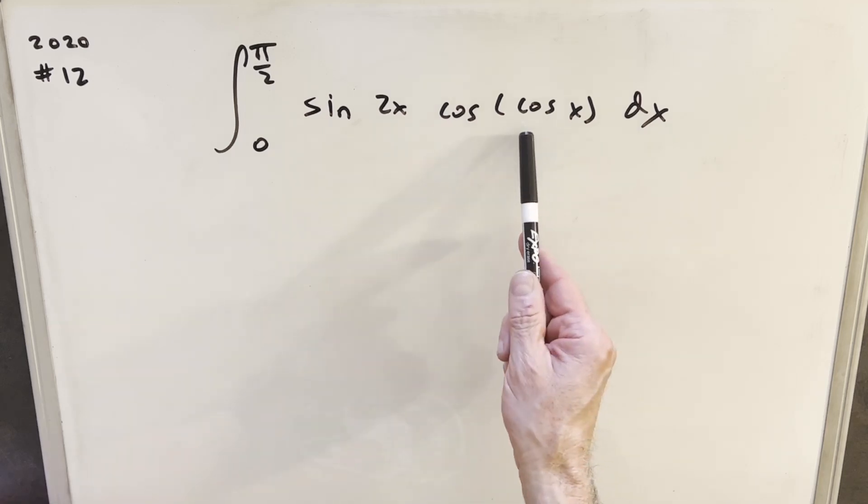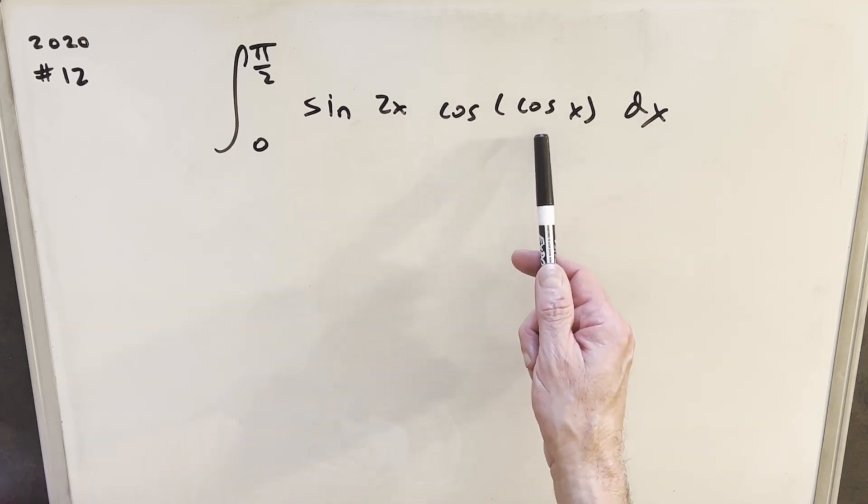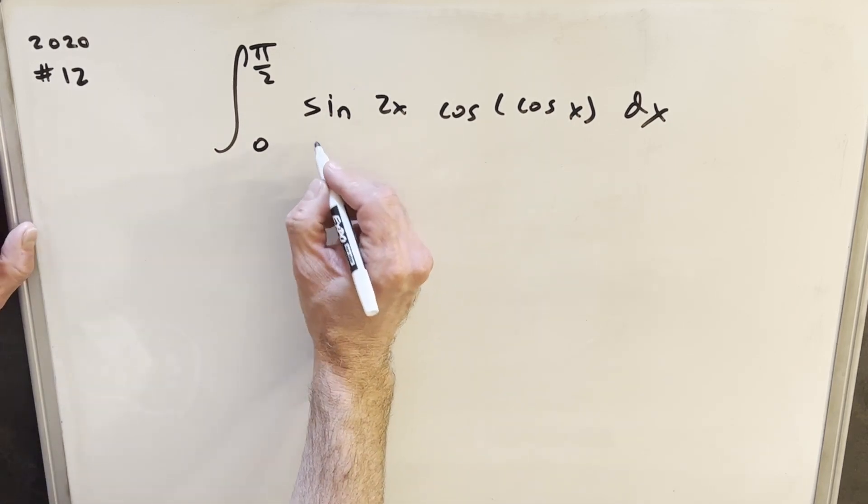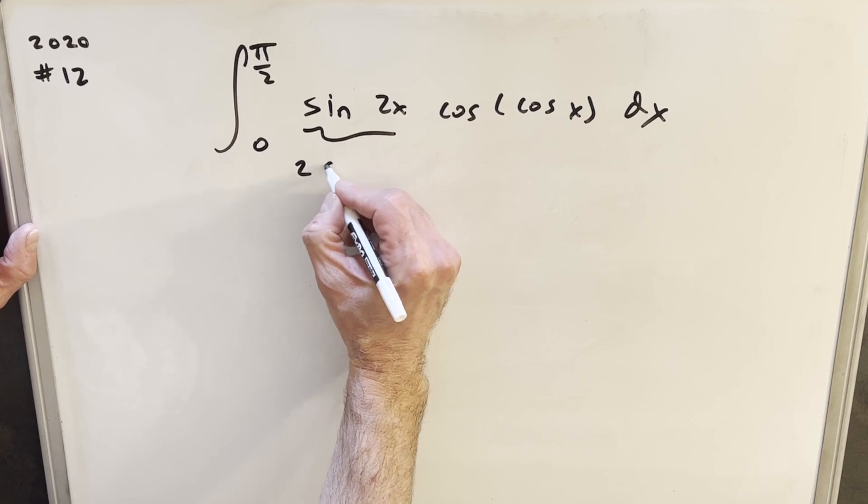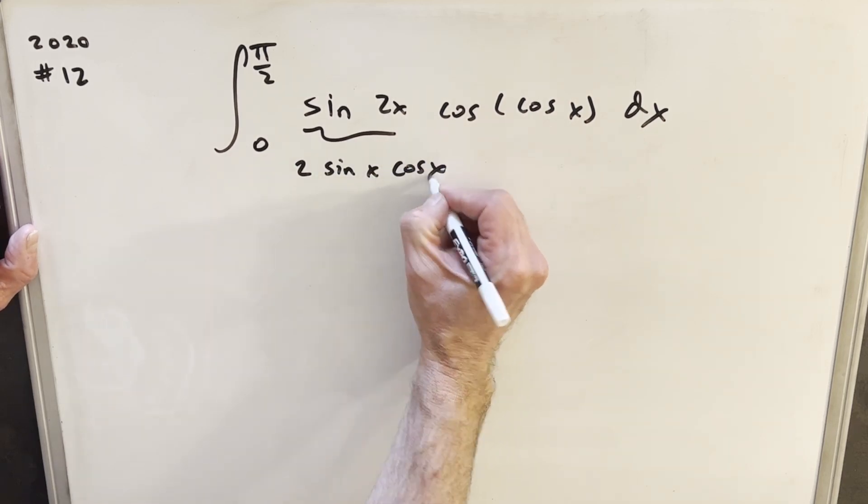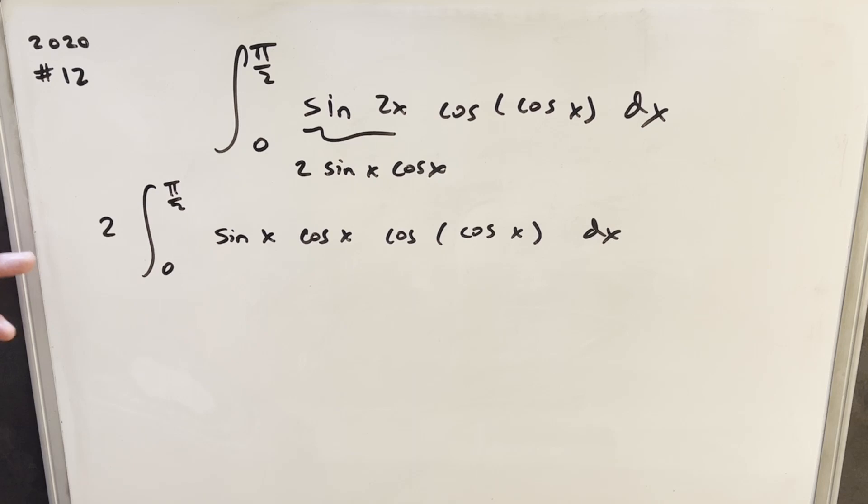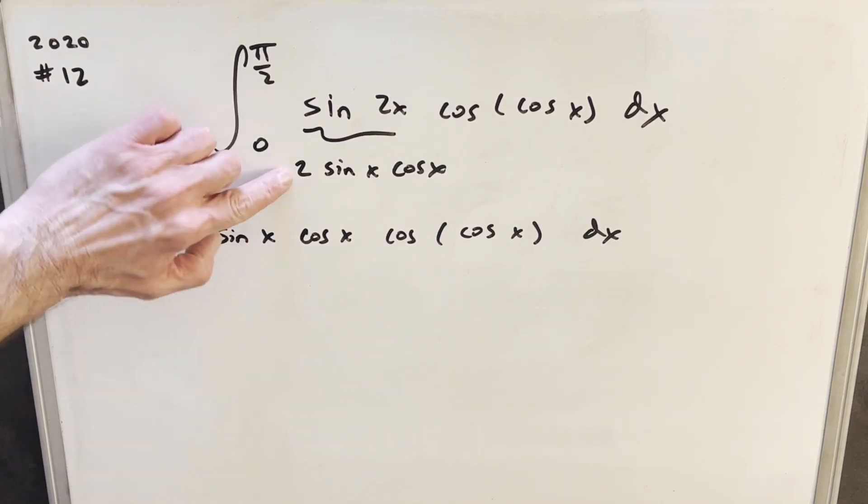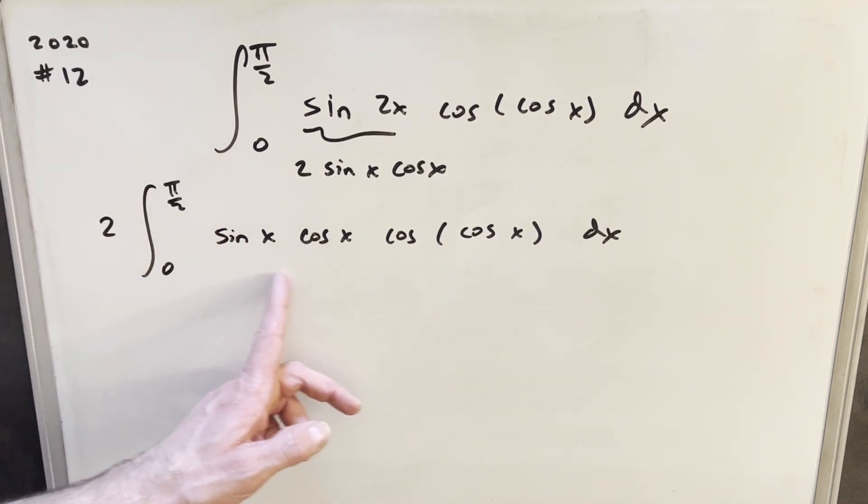So the first thing I notice we're going to want to handle is this cosine in here. Having cosine as the input is kind of tricky, but before I do that, I'm just going to deal with this sine of 2x, noticing that with the double angle formula, we can rewrite this as 2 sine x cos x. And here I just rewrote the whole integral, but I wanted to bring my 2 out front, and we have our sine x cos x replacing our sine 2x here.